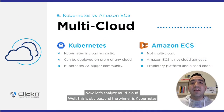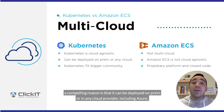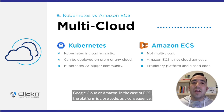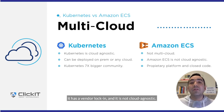Now let's analyze multicloud. This is obvious and the winner is Kubernetes. A compelling reason is that it can be deployed on-prem or on any cloud provider, including Azure, Google Cloud, or Amazon. In the case of ECS, the platform is closed code. As a consequence, it has vendor lock-in and is not cloud agnostic.